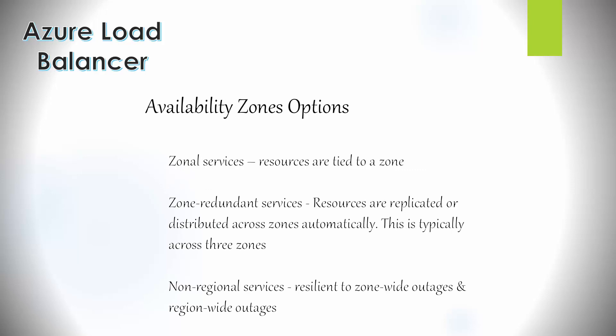There are three availability zone options. The first is zonal services, where resources are tied to a specific zone providing resilience within that zone — load balancer inbound and outbound traffic flows over a single zone in a region. The second is zone-redundant services, where resources are automatically replicated or distributed across zones, typically three zones depending on the region. The third is non-regional services, which are resilient to both zone-wide and region-wide failures, offering the best level of resilience.